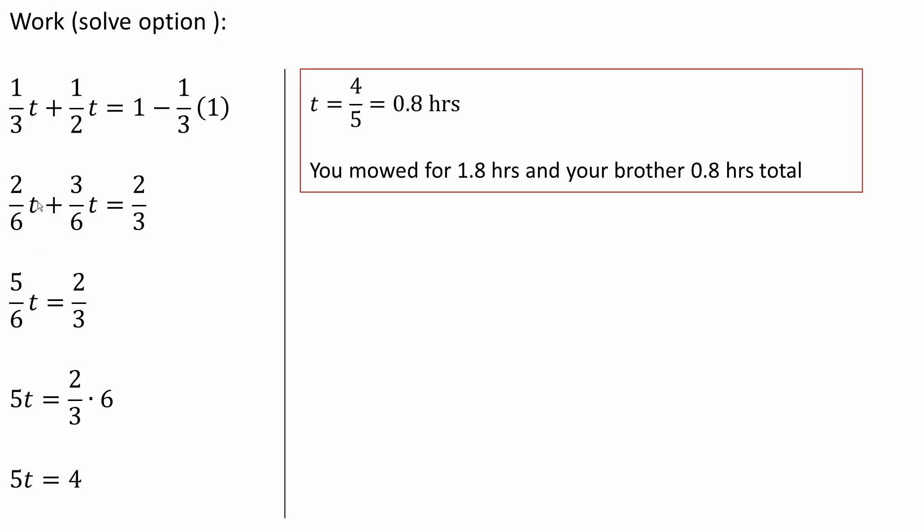Two plus three is five, so 5/6t = 2/3. Then we can cross multiply and get 5t = 2/3 × 6. So 5t = 4, and t = 4/5.